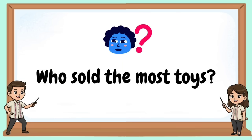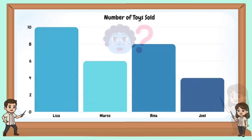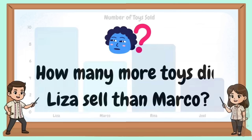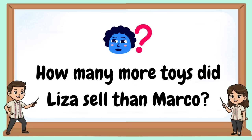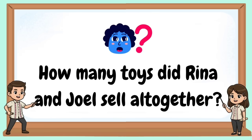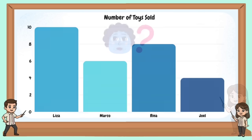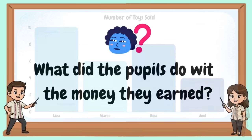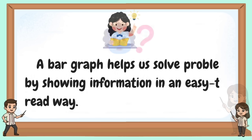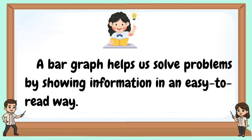Who sold the most toys? Who sold the least toys? How many more toys did Lisa sell than Marco? How many more toys did Rina and Joel sell? What did the pupils do with the money they earned?